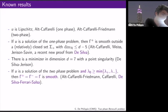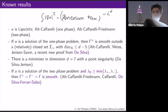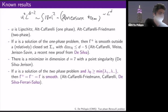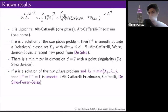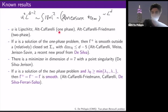Lipschitz regularity is indeed optimal and has been proved by Caffarelli for the one-phase case and by Caffarelli-Jerison-Kenig for the two-phase. For the one-phase, the story is pretty much complete: the positive free boundary is smooth — actually analytic — outside a small closed set of Hausdorff dimension at most d-5. In dimension 3, you don't have any singularities; the first possible singularity might appear in dimension 5.